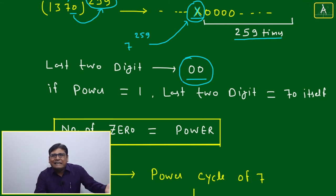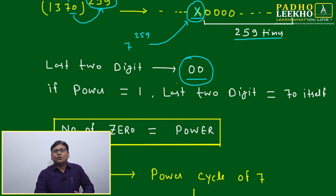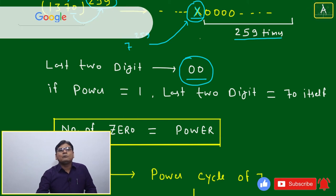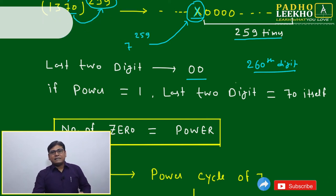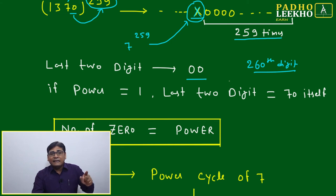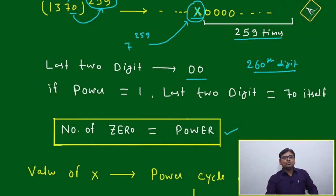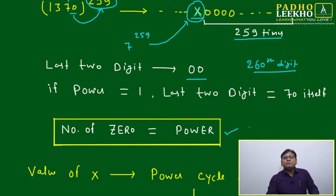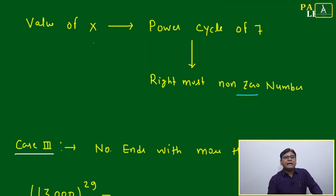Of course, not just the last two but the last 100, 200, or even 258 digits will all be 0. The 259th digit will also be 0, and the 260th digit will be X — the first non-zero integer from the right-hand side. We can state the rule: when a number ends with 10, the number of zeros equals the power. The value of X — the rightmost non-zero integer — depends on the power cycle of 7.